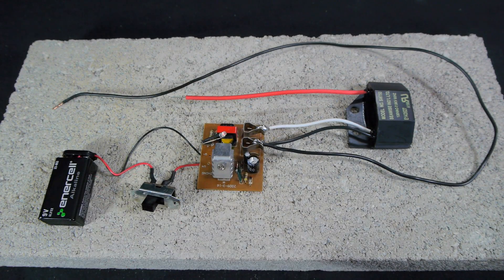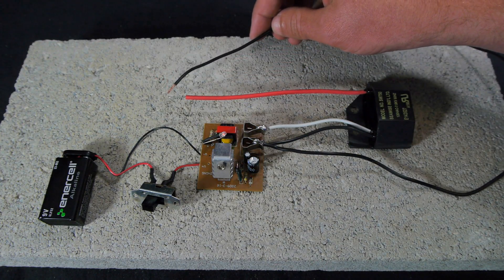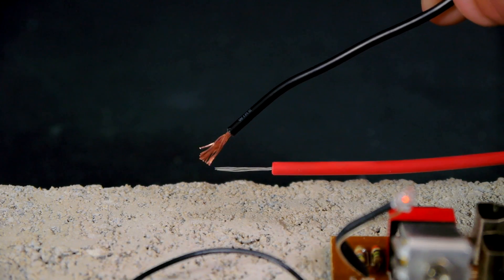So we can now make sure everything is working properly by reconnecting the battery, turning on the power, and making sure that a spark arcs between the ground wire and the red wire coming off of the ion generator.